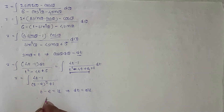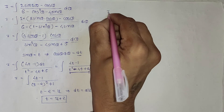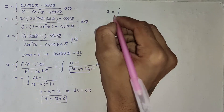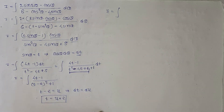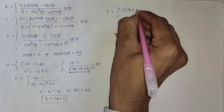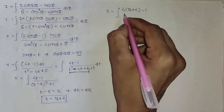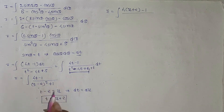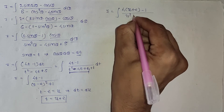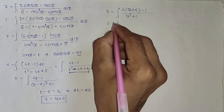Now further assume t minus 2 equal to u, so dt equal to du and t equal to u plus 2. Now I equal to integration: put t equal to u plus 2, so 4 times (u plus 2) minus 1, divided by u squared plus 1.